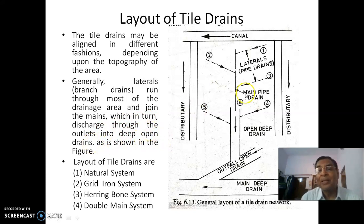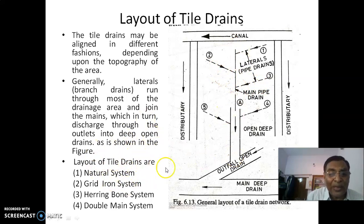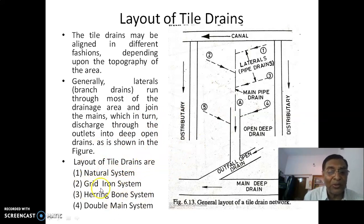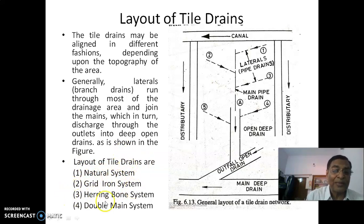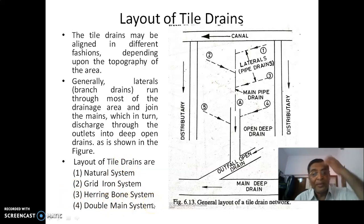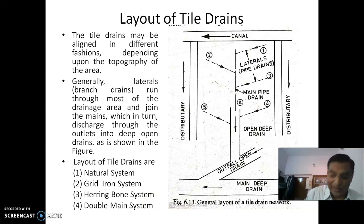The main drain and laterals are connected as described. Depending on the topography, tile drain layouts are designed into various systems: the natural system, the gridiron system, the herringbone system, and the double main system. These are the various systems depending on the topography of the field. Let us look at them one by one.